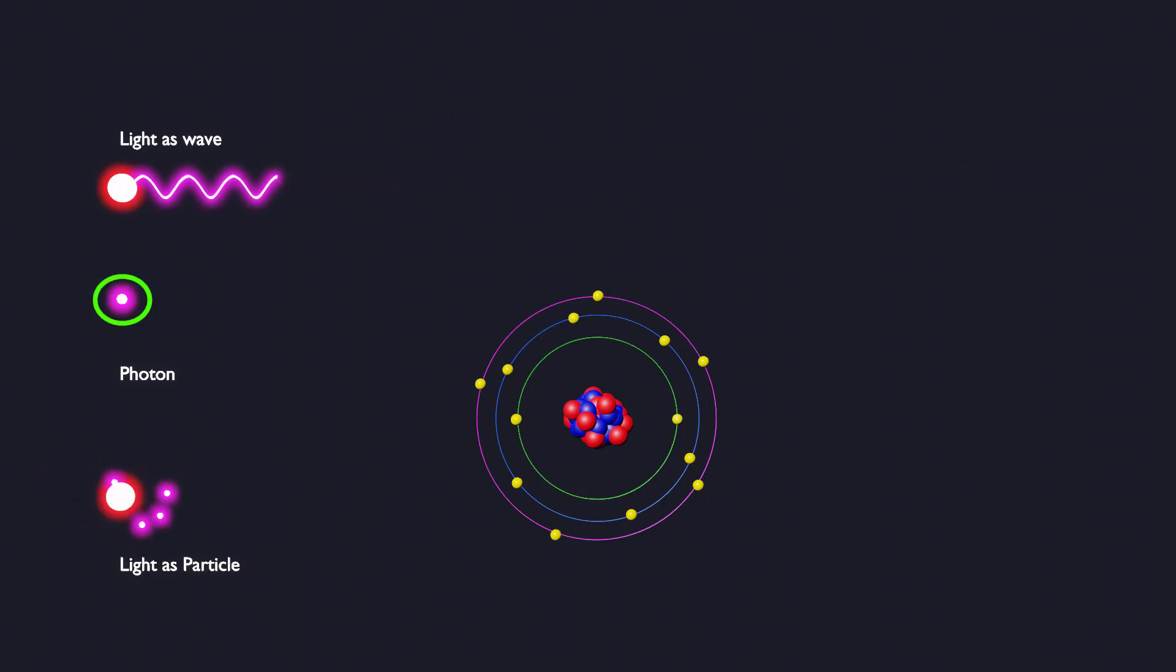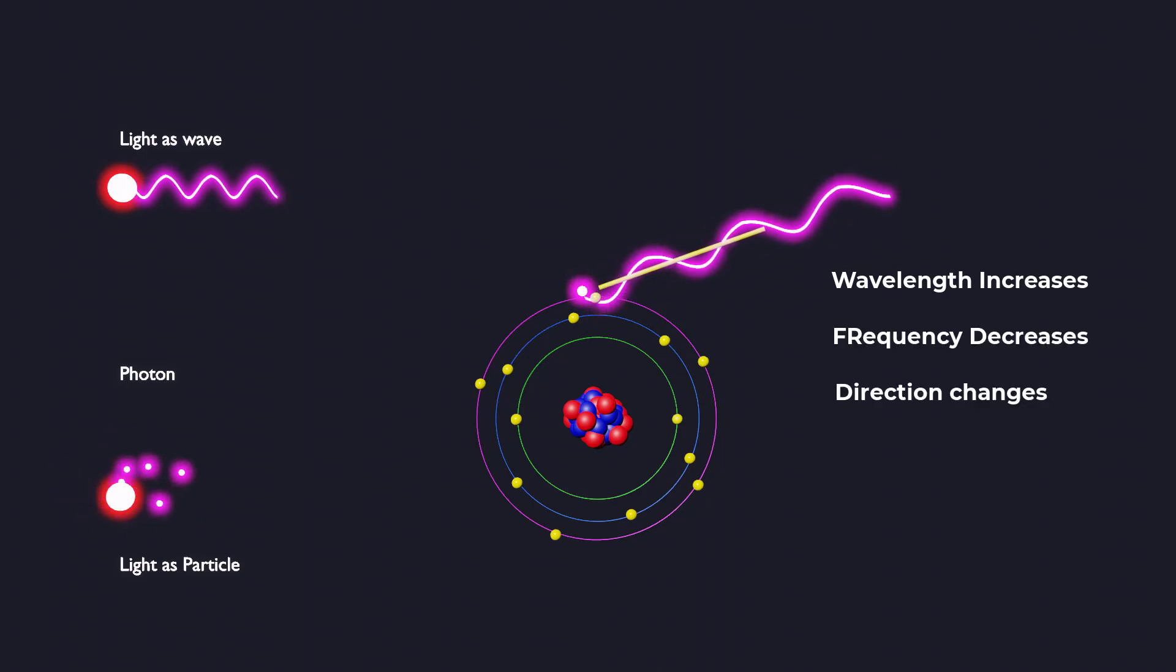When a high-energy photon with a specific wavelength and frequency interacts with an electron, it transfers some of its energy and momentum to the electron. This collision changes the photon's wavelength, frequency, and direction while causing it to lose energy.